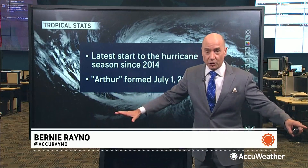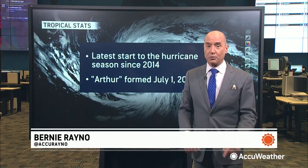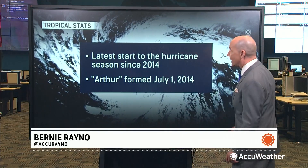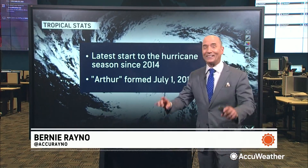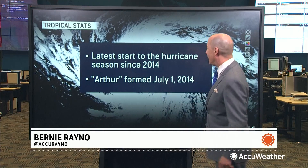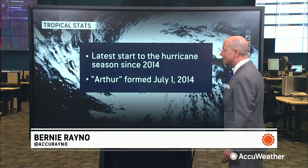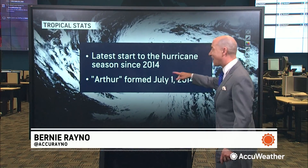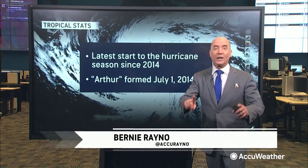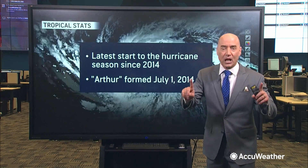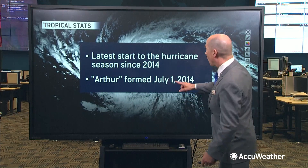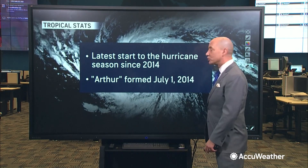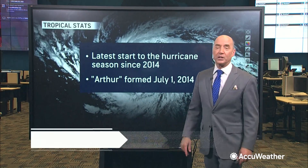Hurricane season started officially June 1st. We haven't had a storm yet, and this is really the latest start of the hurricane season we've seen since 2014. That year, we didn't have our first named storm — it was Arthur — until July 1st, 2014.